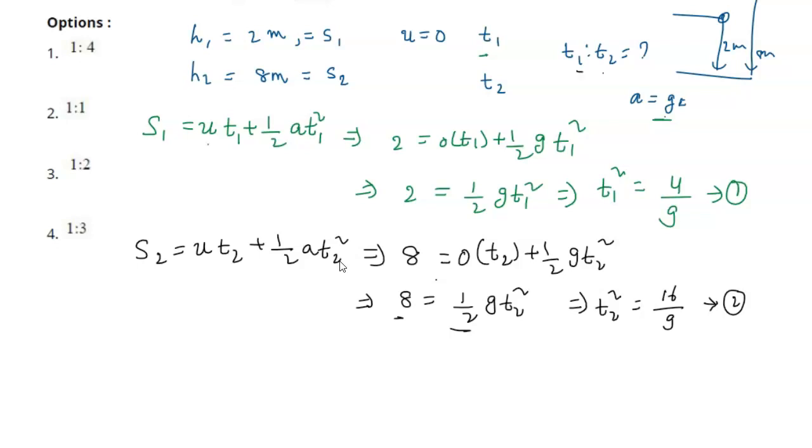Now finding t1 by t2: we get the square root of 4 by g divided by the square root of 16 by g. The g terms cancel, giving us the square root of 4 over 16, which equals the square root of 1 by 4. So t1 by t2 equals 1 by 2.